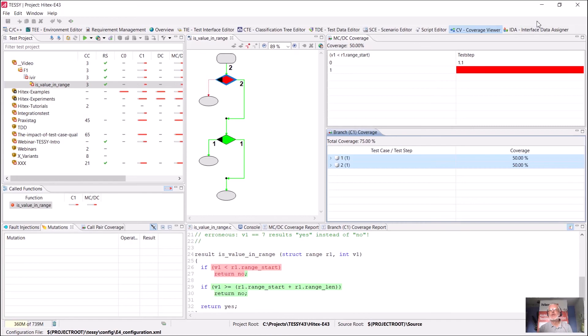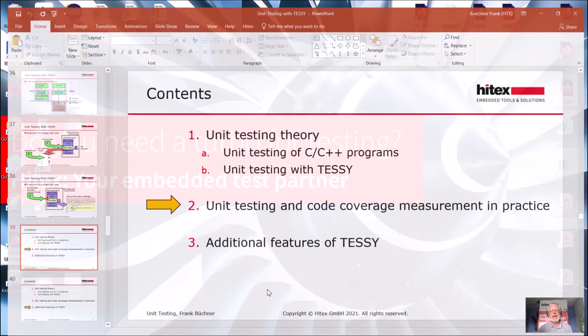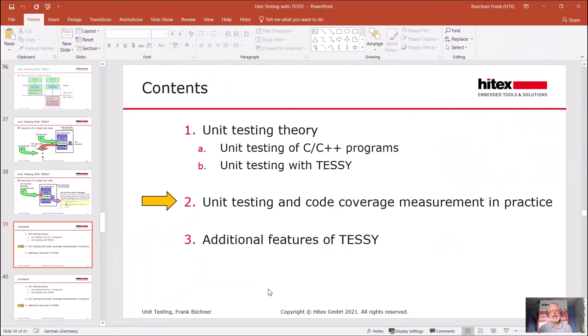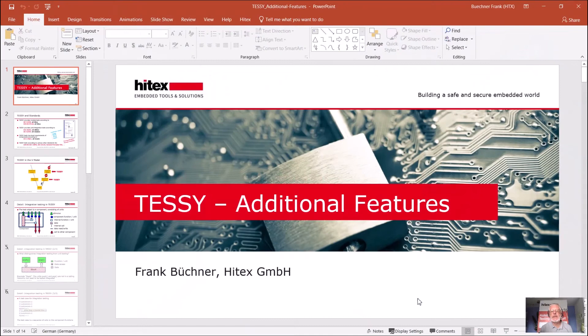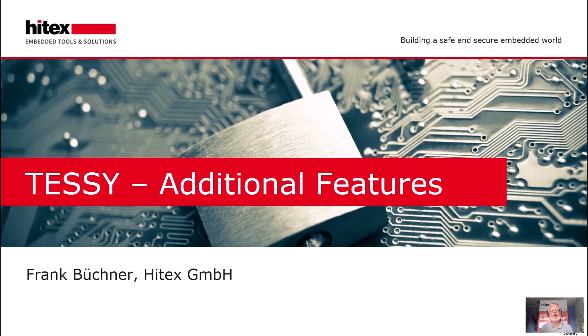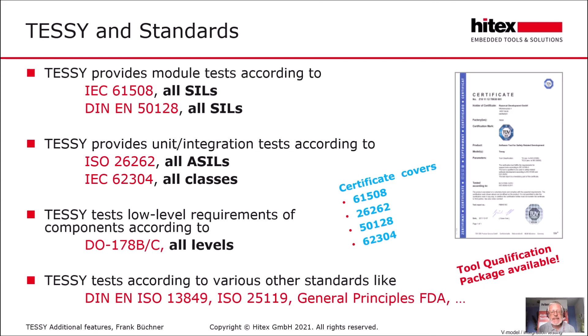This concludes the practical demonstration. Let's look at the main additional features of TESI. First, TESI has a certificate from TÜV in Munich, Germany, stating that TESI can be used for the development or testing of safety critical applications. The certificate covers IEC 61508 — the general standard for safety critical projects — ISO 26262 for automotive, EN 50128 for railway, and IEC 62304 for medical applications. If the certificate is not sufficient for tool qualification in your standards, a separate tool qualification package is available.